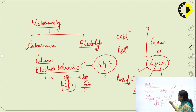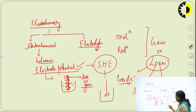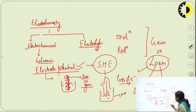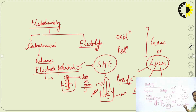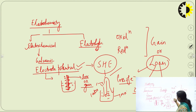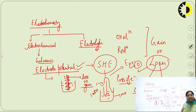In the Standard Hydrogen Electrode, a platinum wire coated with platinum is dipped in a 1 molar H+ ion solution, and hydrogen gas is continuously passed at 1 atmospheric pressure. If SHE is attached with another electrode where reduction occurs, it will act as the anode. If attached where oxidation occurs, it acts as the cathode. The potential of the hydrogen electrode — whether oxidation or reduction — is taken as zero.